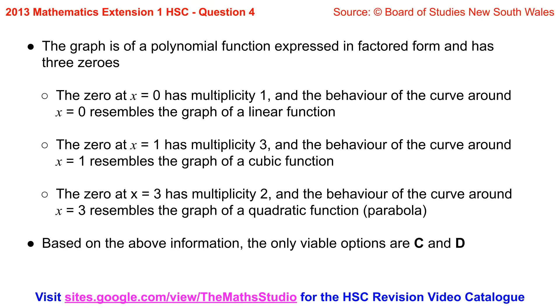The graph is of a polynomial function expressed in factored form and has three zeros. The zero at x equals zero has multiplicity 1 and the behavior of the curve around x equals zero resembles the graph of a linear function.